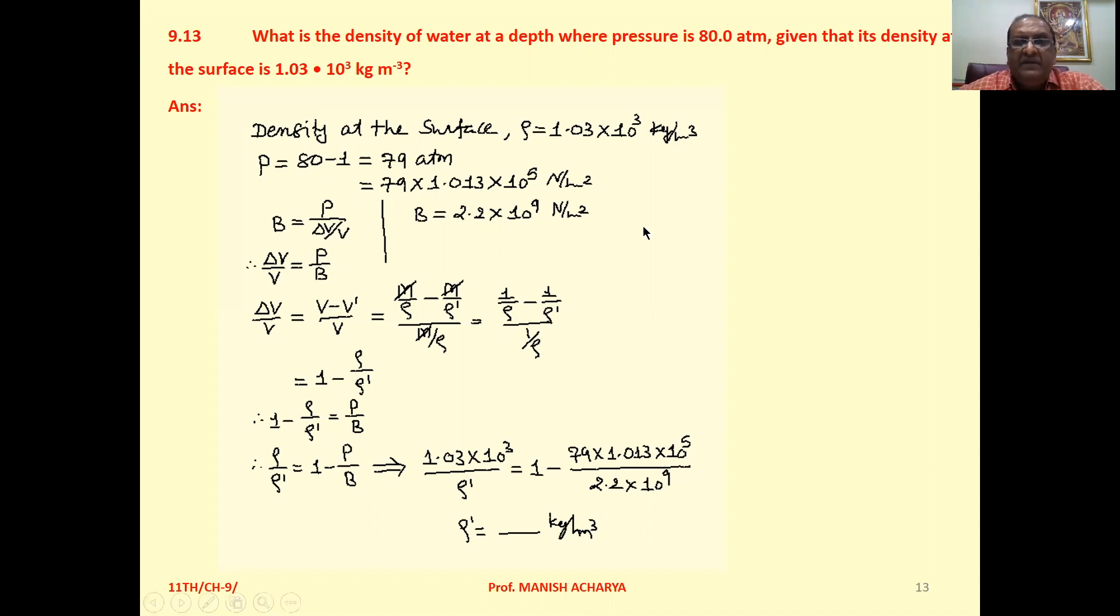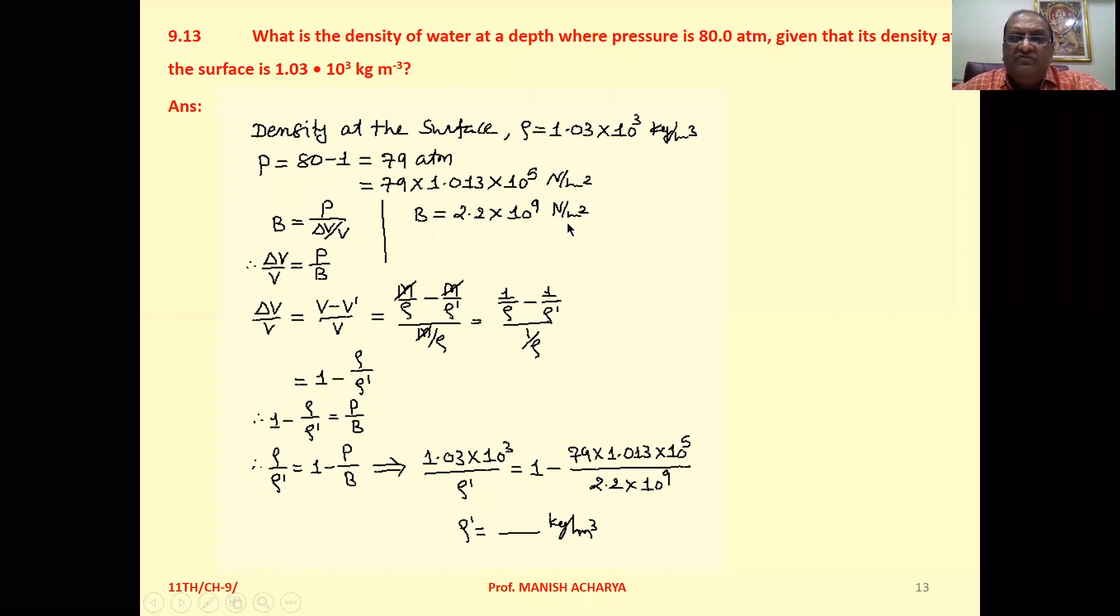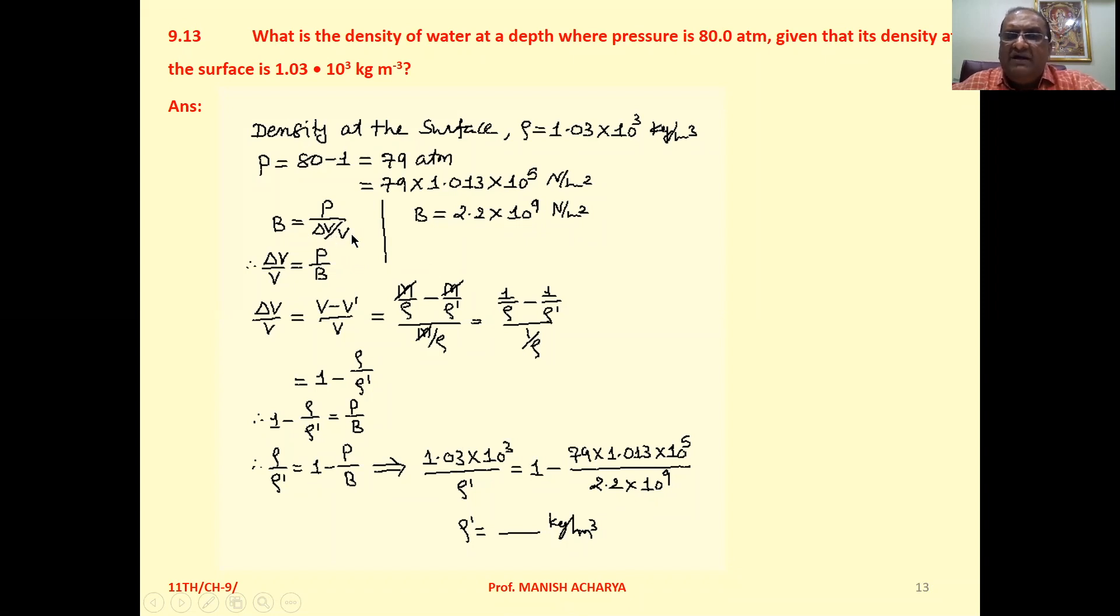Now see, we have the equation of bulk modulus: B equals P over delta V by V. So delta V by V is P by B.